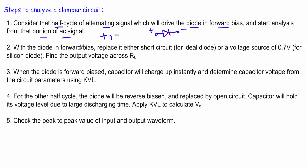As the diode is in forward bias, we can replace it either with a short circuit or a voltage source of 0.7 volt. If it is specifically mentioned that this is a silicon diode, we know that a diode has three equivalent circuits. One is the ideal circuit — in that case the diode is replaced by a total short circuit. The second is the approximate equivalent circuit, where the diode is replaced by its built-in potential, and we calculate the output voltage across the load resistor RL.